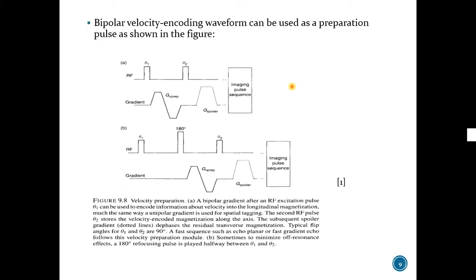Where do we apply bipolar velocity encoding gradients? They can be applied after RF excitation, before the imaging pulse sequence, as a preparation. Spoiler gradients dephase transverse magnetization, and actual imaging pulse sequence may follow. Of course, it is not the only way to do that.